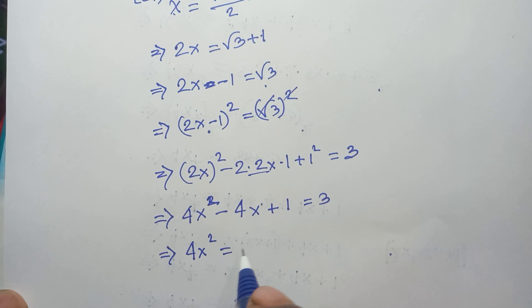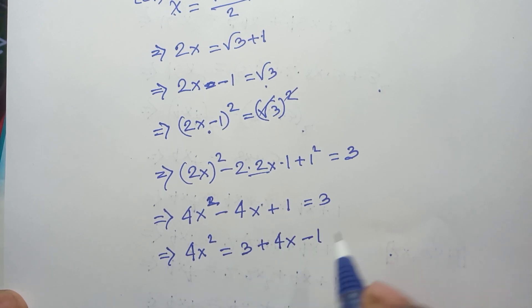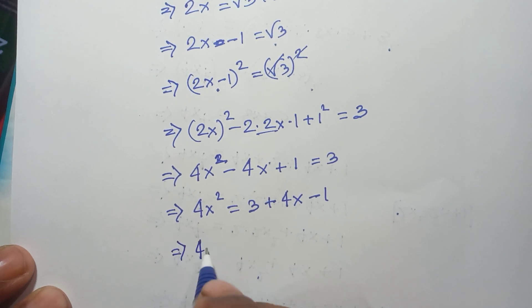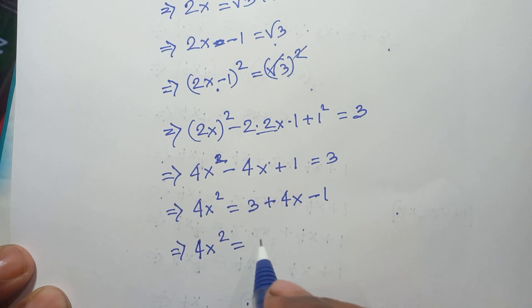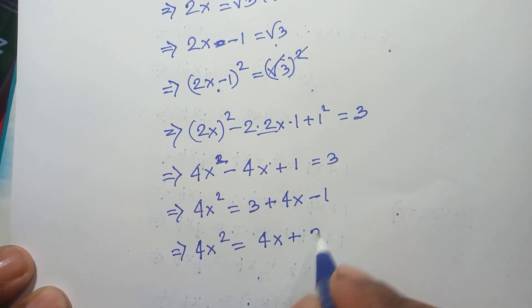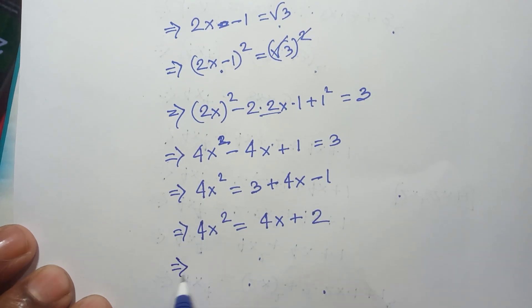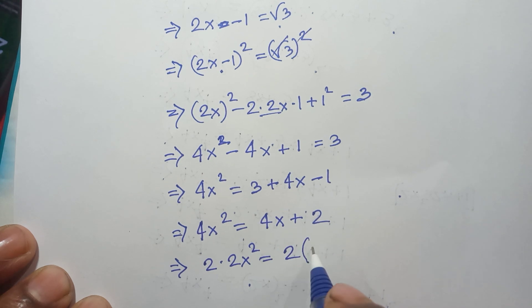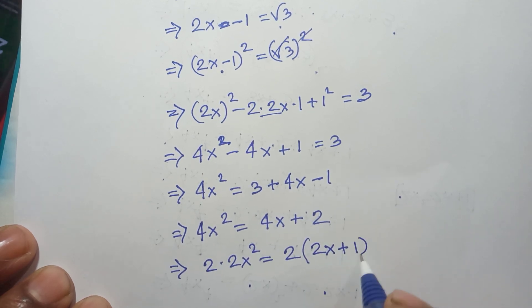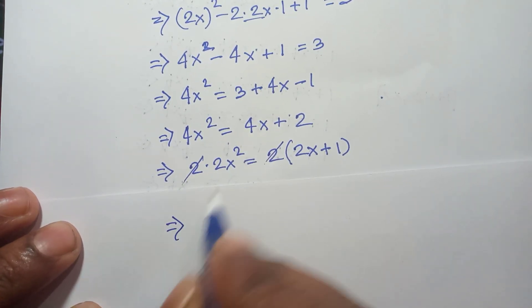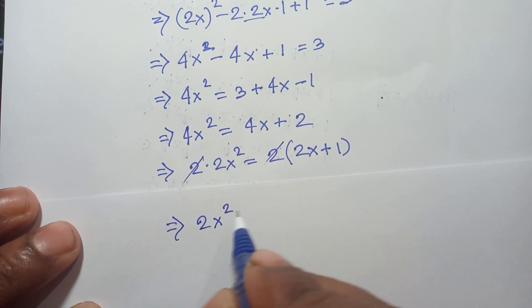So 4x² − 4x + 1 = 3. Moving 4x² and −4x + 1 to the right side gives 0 = 3 − 4x² + 4x − 1, i.e., 4x² = 4x + 2. Dividing both sides by 2, we get: 2x² = 2x + 1.